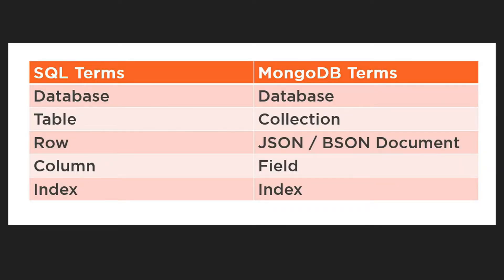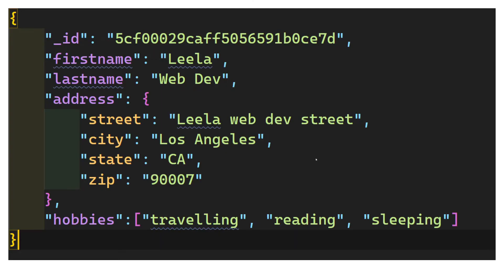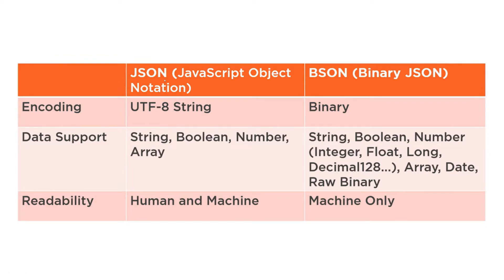Now let's look at BSON. We've seen that rows in MongoDB are JSON or BSON documents. Now that we understand JSON, what is BSON and what is the difference? MongoDB mainly uses BSON documents. JSON stands for JavaScript Object Notation, whereas BSON stands for Binary JSON. BSON is generally the binary representation of JSON — they are very close to each other.